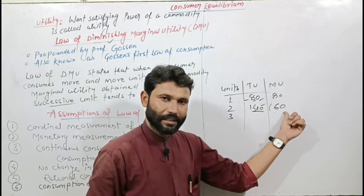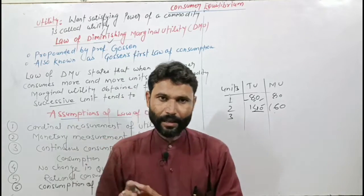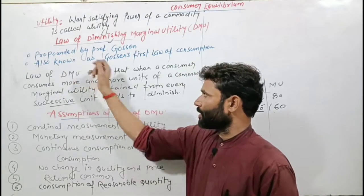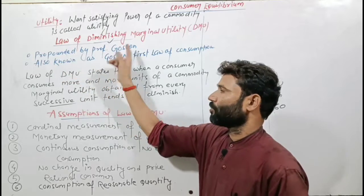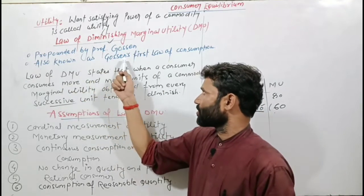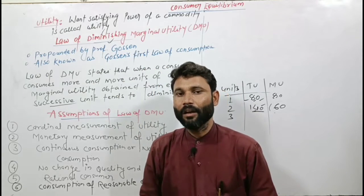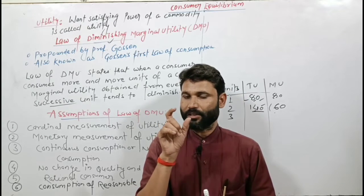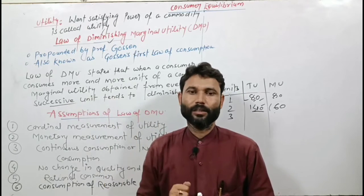So the second unit's marginal utility is 60 utils. Now, the Law of Diminishing Marginal Utility was propounded by Professor H.H. Gossen, and it is also called Gossen's First Law of Consumption.